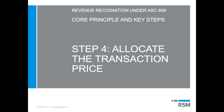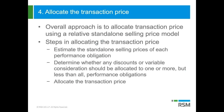Rich is going to talk about allocating the transaction price. As Brian mentioned, we're going to take that price and allocate it to the performance obligations identified back in step two. To do that allocation, you're going to use a relative standalone selling price model, which is pretty consistent with the allocation approach in the multiple element guidance in existing GAAP today — they're both relative standalone selling price approaches.